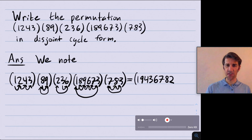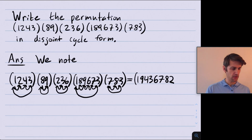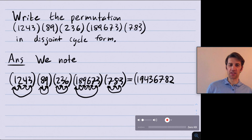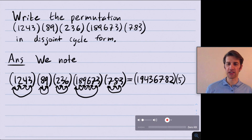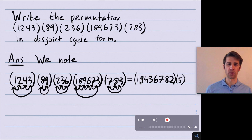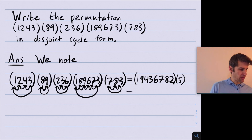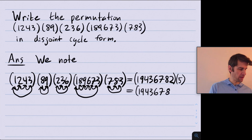Now where does 2 go? This cycle doesn't move 2, nor does this one. This cycle moves 2 to 3. Then 3 gets moved back to 1. So 2 goes to 1 — and I notice that 1 was the start of this cycle, so I close the parenthesis. I've now tracked where 1, 2, 3, 4, 6, 7, 8, and 9 go. What about 5? None of the cycles move 5, so 5 maps to itself. Since 5 is in a cycle of length 1, we often drop it and just write the single cycle.